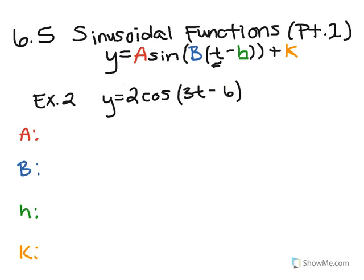Alright, so here we go. y equals 2 cos(3t - 6). So, very quickly, I can determine the two easiest parts of this, which are the amplitude and the midline. So, let's go ahead and do that. So, the coefficient of my trig function is 2. So, that is my amplitude. And whatever is being added out here to the end, which in this case is 0, is my midline. So, y equals 0. Alright, two easiest parts done. Now, what are B and h?